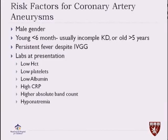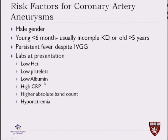The risk factors for coronary artery aneurysms are usually male gender, young age less than six months — usually those patients present with incomplete Kawasaki disease — or older children more than five years, who are typically missed. If those patients have persistent fever despite IV gamma globulin, we know there is severe ongoing vasculitis if they present with low hematocrit, low platelets, low albumin, high CRP more than 10 mg/L, higher absolute band count, or low sodium.